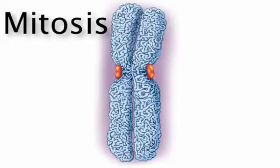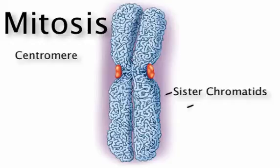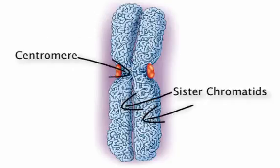Since the DNA replicates during the S phase of interphase, by the time we get to mitosis, each of our 46 chromosomes is comprised of two identical sister chromatids bound by a centromere.